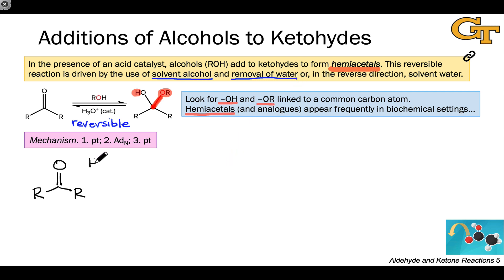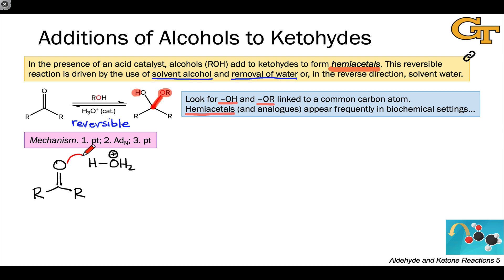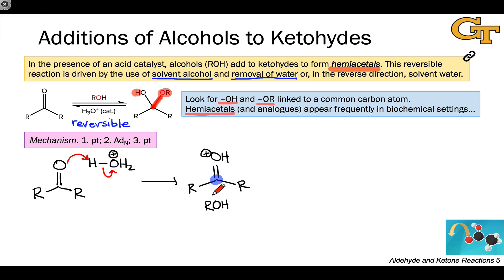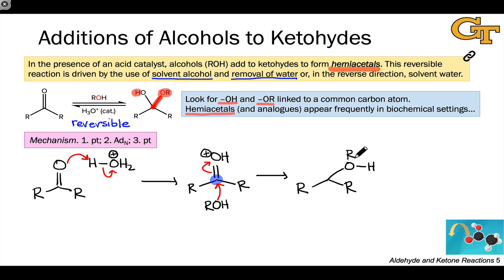The mechanism of this reaction begins like all acid-catalyzed mechanisms involving the carbonyl group: with protonation of the electrophilic group — specifically protonation of the most basic atom in the carbonyl group, the carbonyl oxygen. The resulting protonated carbonyl intermediate is strongly electrophilic at the carbonyl carbon, and that protonation facilitates nucleophilic addition of the alcohol oxygen to the carbonyl carbon. After nucleophilic addition to the polarized pi bond, we end up with an intermediate that is essentially a protonated hemiacetal.